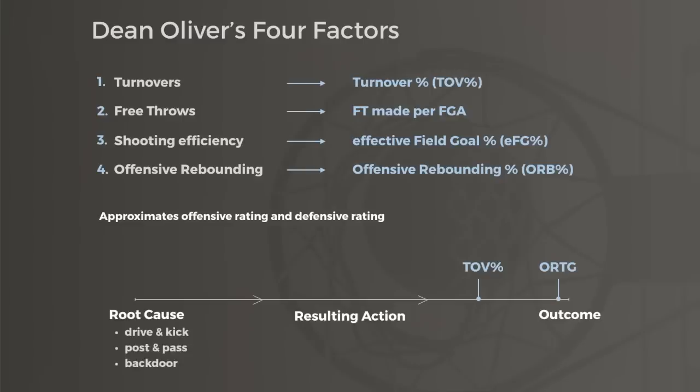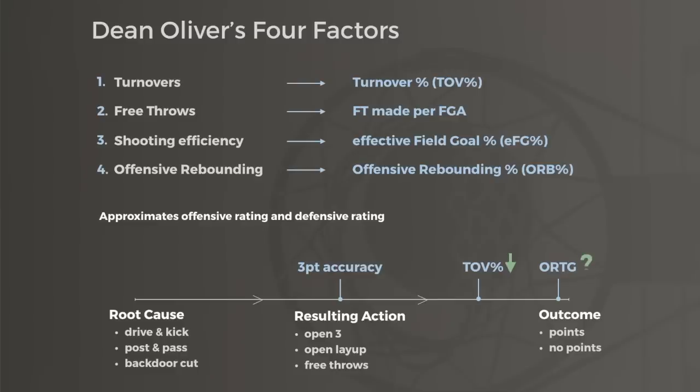Teams increase efficiency by generating easier scoring attempts and then cashing in on those opportunities. A better three-point shooter will make more open threes, but a deliberate attempt to reduce turnovers won't necessarily improve a team's offense if it doesn't lead to easier scoring chances. The easiest way to see this is to swap out a low-turnover guard like Stefan Marbury for a higher-turnover one like Jason Kidd. When this happened in 2002, not only did New Jersey's offense improve, but its turnover rate declined. More on this in part four.